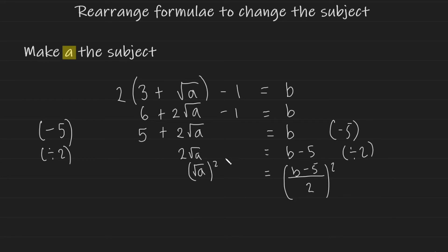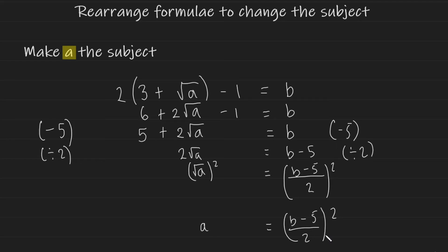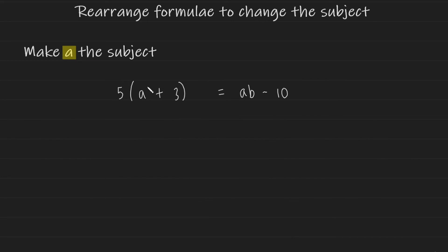The square root of a squared — the square root and the square cancel out, leaving just a. The other side remains the same: b minus 5 over 2, all squared. And there you have it — that's how you solve a slightly more complicated problem such as this.